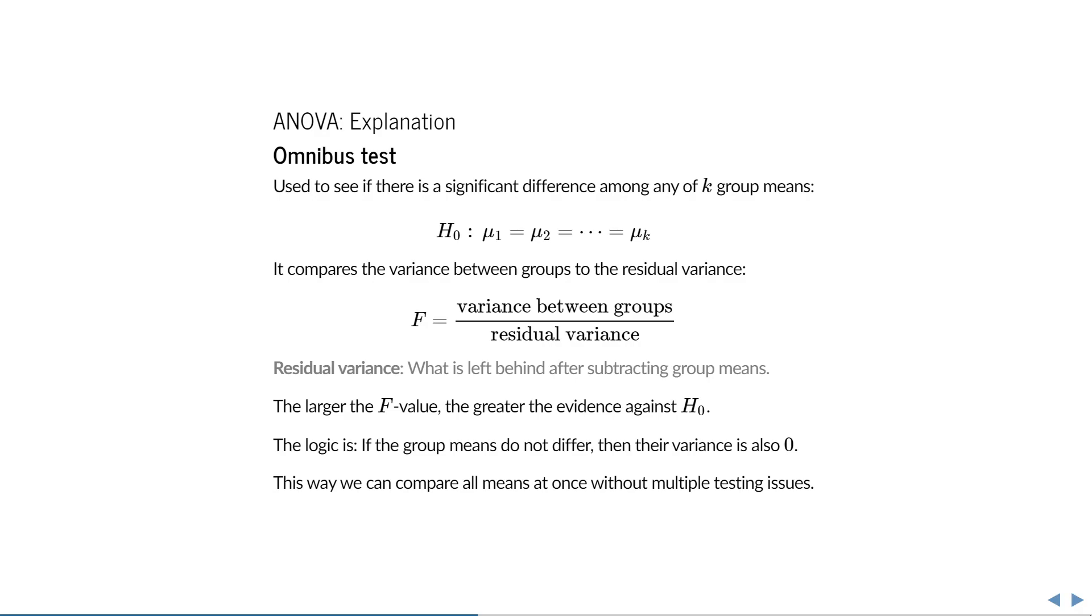To understand why that works, consider that if something does not vary, then its variance is 0. Hence, if the group means were indeed equal, then their variance is 0, and the resulting f value is also 0. The larger the difference in group means, the more they vary, and the greater your evidence against the null.